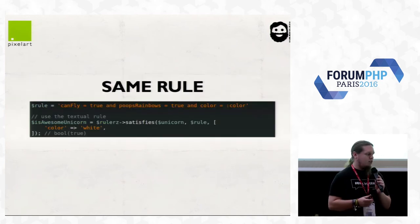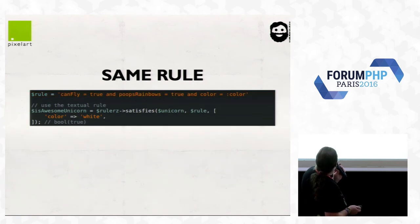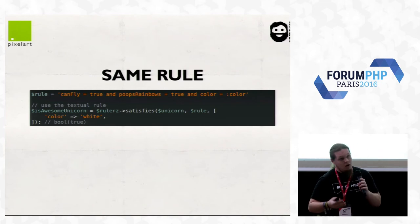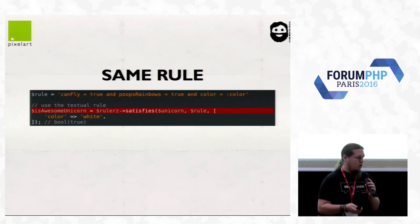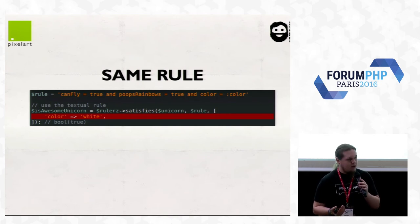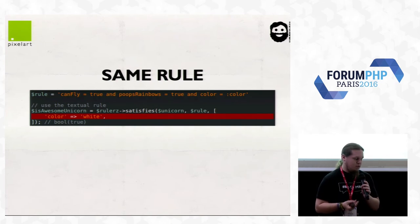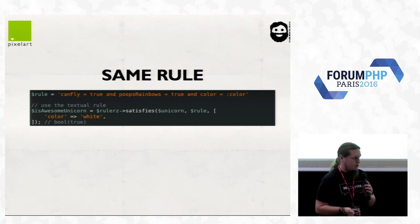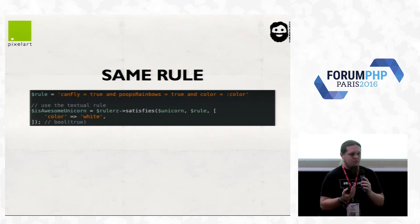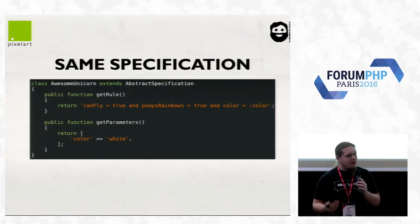If we have a rulers instance, you can write your business rule. In this case it looks like SQL: can_fly is true AND poops_rainbows is true AND color = :color. We ask the rulers engine if the unicorn instance satisfies this rule, supplying the prepared parameter — always use prepared statements, don't concatenate user input. It's the same rule as before but in your business language. Since it looks like SQL, it's really easy to pick up.